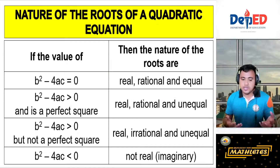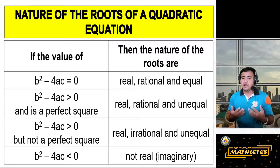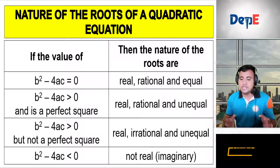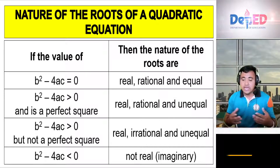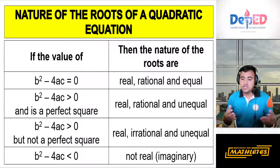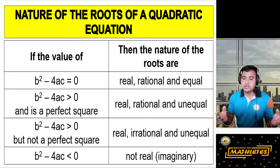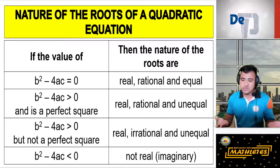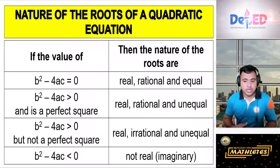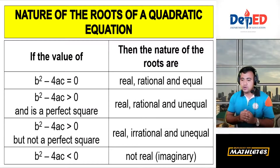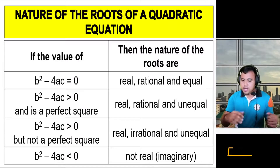If the value of our discriminant — b squared minus 4ac — is less than 0, meaning it is negative, then the roots are not real, or imaginary numbers.